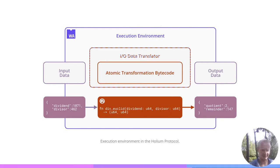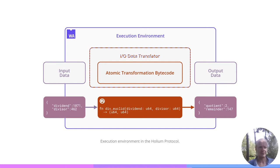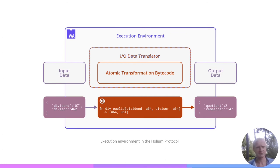For example, we have a function written in Rust that's responsible for performing Euclidean division. We would hand over a JSON object with a dividend field and a divisor field, and the atomic transformation, if successful, would return another object with two fields for quotient and remainder.